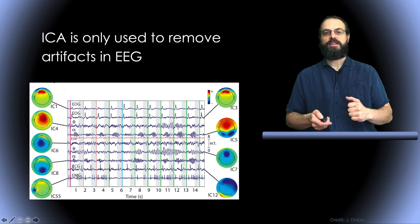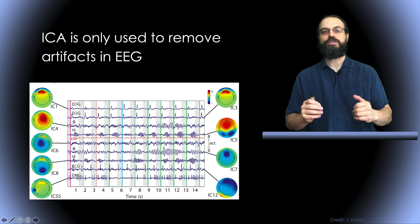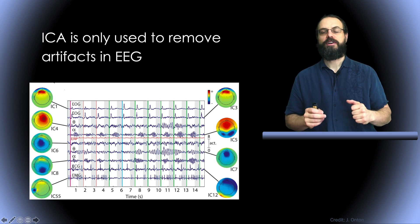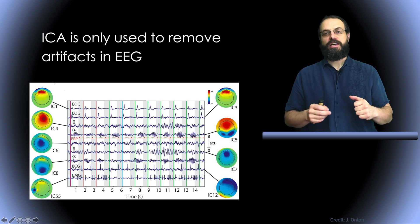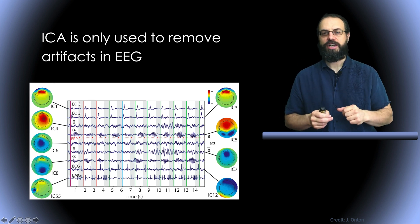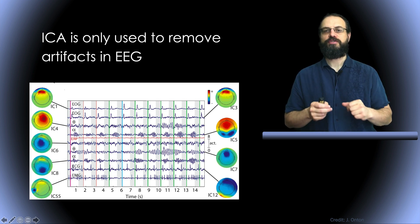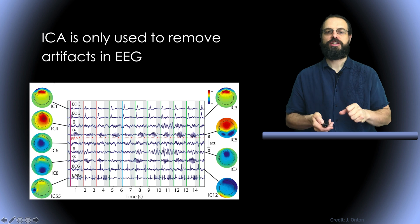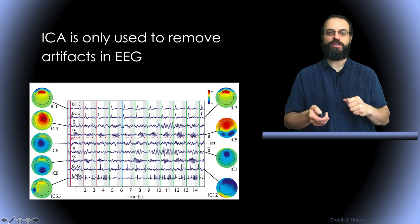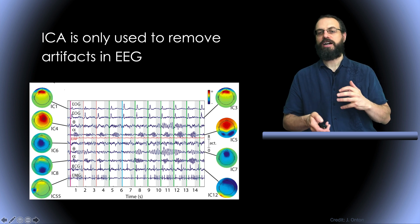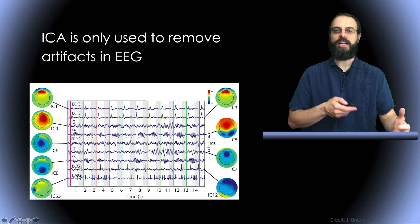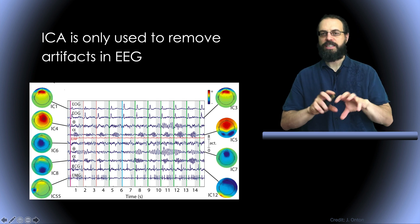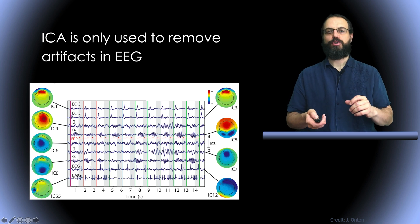The second misconception is that ICA can only be used to remove artifacts in EEG. I hope through this series of presentations I was able to convince you that you can actually look at brain sources using ICA as well. This is one of the slides I presented where you can see the contribution of occipital alpha, frontal midline theta, and how ICA separates these components.